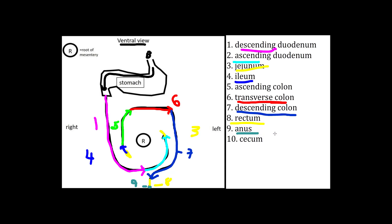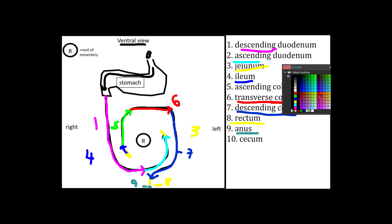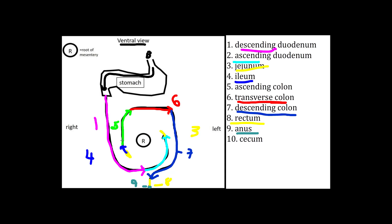The final structure we're going to draw will be the cecum. In the dog the cecum communicates with the ascending colon. The cecum is found to the right of the root of the mesentery, communicating with the ascending colon.